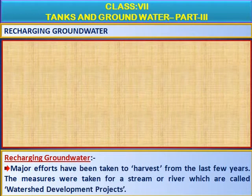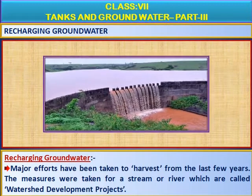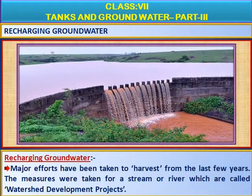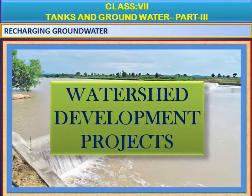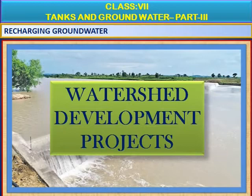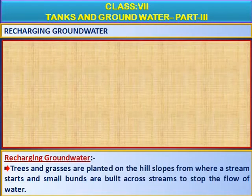What is water harvesting? Water harvesting means collecting the runoff rainwater and storing it in a pond. It can be used for irrigating the standing crop during critical periods. This is also known as life-saving irrigation. Major efforts have been taken to harvest water from the last few years. The measures taken for a stream or river are called watershed development projects. Watershed development has been accepted as a principal national approach and strategy for development of dry land farming. In watershed development, the soil is prepared so as to reduce the velocity of runoff water by changing the angle of the slope of the land. The slowing down of the velocity of running rainwater allows more water to percolate into the subsoil. This is called the watershed development project.